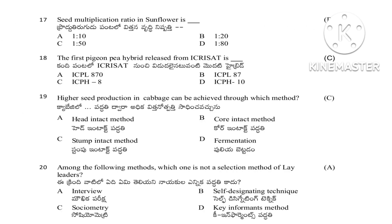Question 17: Seed multiplication ratio of sunflower — 1:10, 1:20, 1:50, or 1:80. The answer is 1:80. Question 18: First PGNP hybrid released from ICRISAT — ICPL-870, ICPL-87, ICPH-8, or ICPH-10. The answer is ICPH-8, which is the first red gram hybrid released.